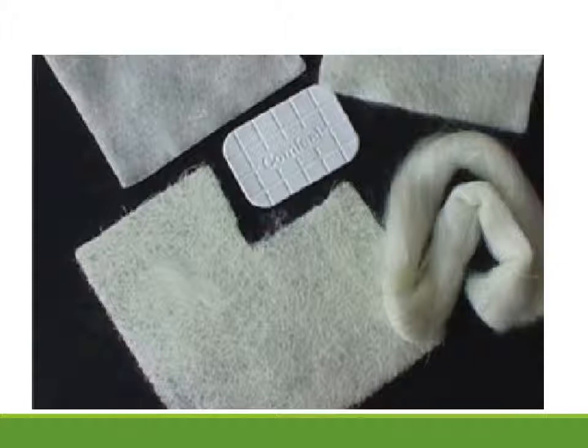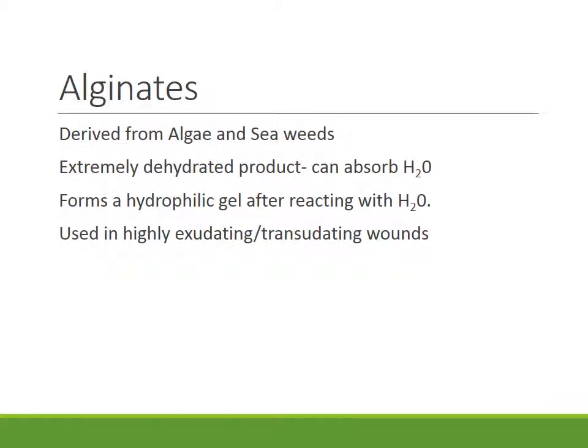Alginates have been derived from algae and seaweeds. Once produced, it is an extremely dehydrated product that can absorb water. If you take a gram of alginate, it can absorb up to 500 times its weight in distilled water, up to 50 times its weight in normal saline, and up to 11 to 15 times its own weight in exudate. As fluid gets more viscous, the absorptive capacity reduces, but it can still absorb up to 15 times its own weight in exudate, so it can be used for highly exudating wounds.